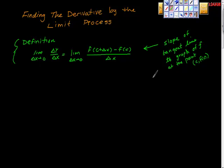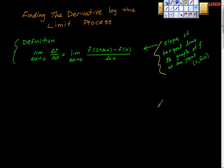The definition of the derivative is the limit as the change of x approaches zero of Δy over Δx, which equals the limit as Δx approaches zero of that expression. This quantifies things a bit more — when we talk about slope and derivatives, we're talking about the slope of the line tangent to the curve at the point we're interested in.